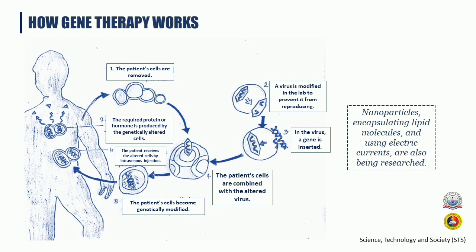Vectors are introduced into the body by injection or intravenous (IV) infusion. In certain circumstances, doctors extract cells from a patient, add vectors in a laboratory, and then inject or IV infuse the vector-containing cells back into the patient's body.